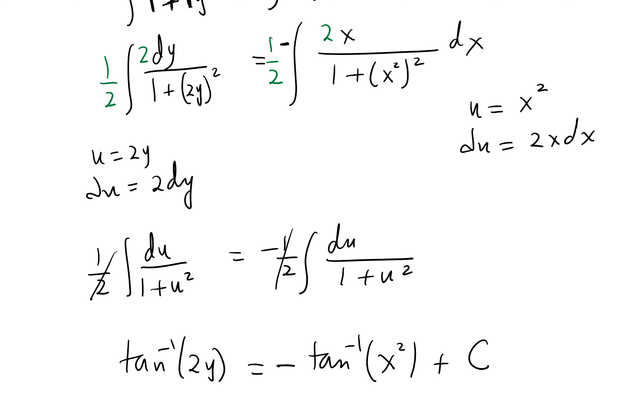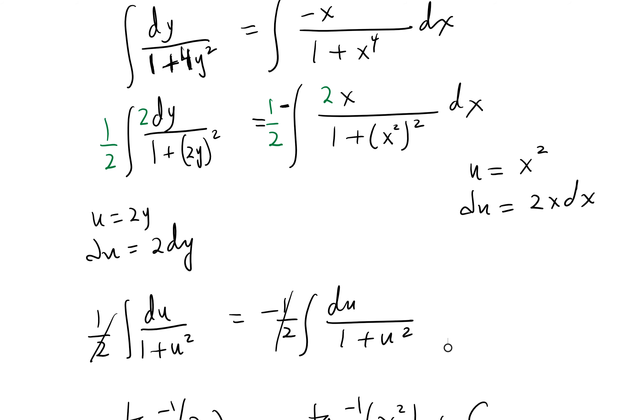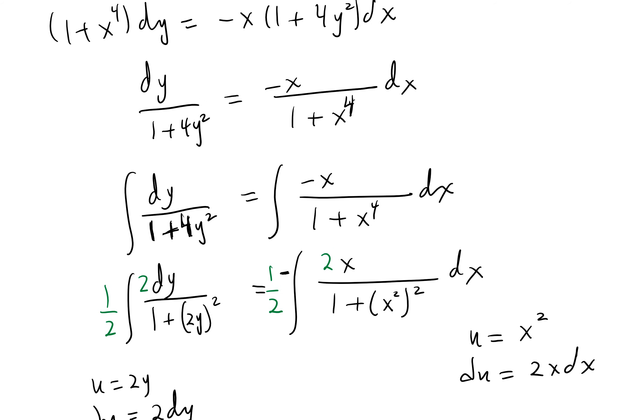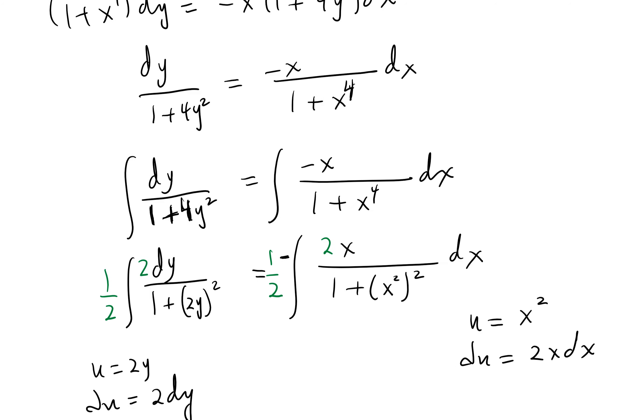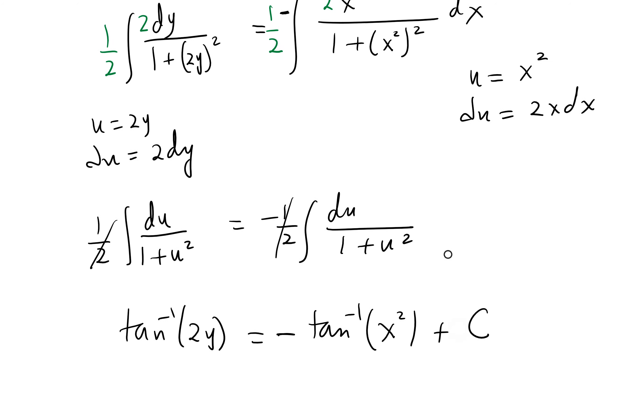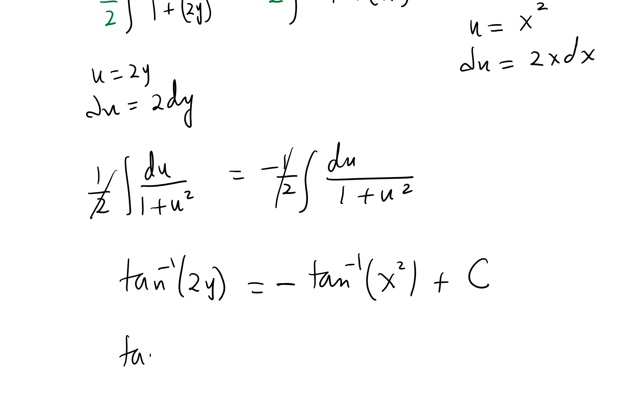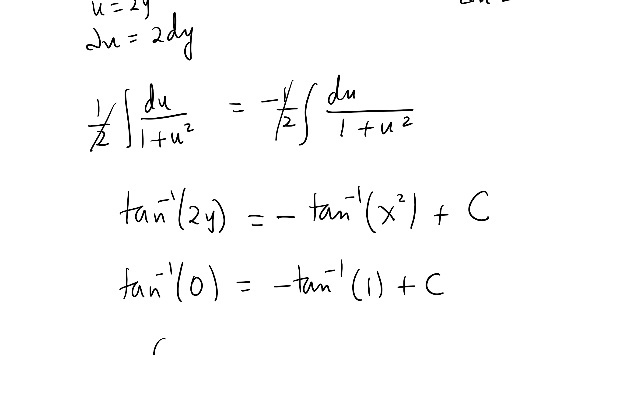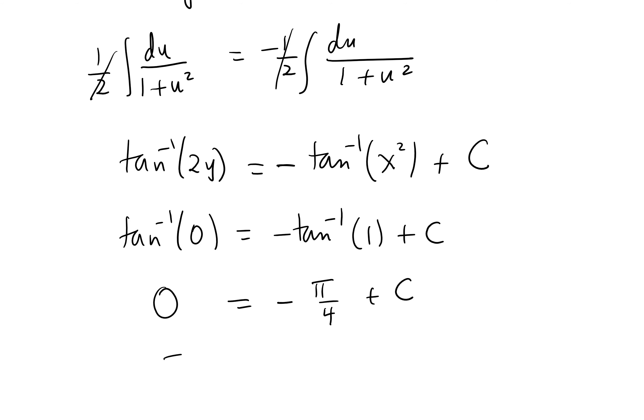Another thing a lot of people forget on the test is the initial value condition, y(1) = 0. So this means when x is 1, y is 0. So that's a 0. This is 1 plus c. This is 0. Tan inverse of 1 is pi over 4. So that tells me c is pi over 4.